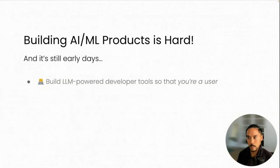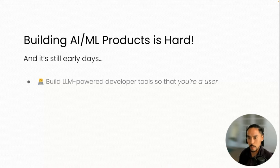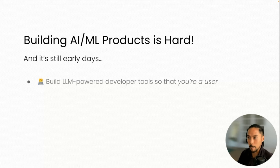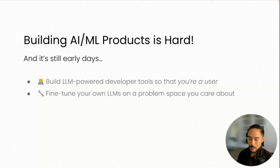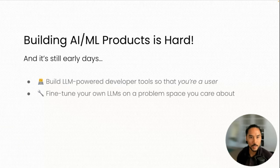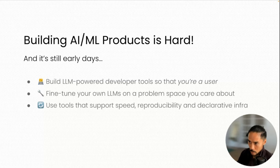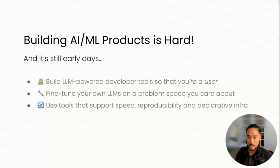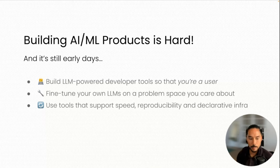It's good to build LLM-powered developer tools so that you're a user. We are all coders and programmers, and many of the use cases of LLMs are for coding — I use GitHub Copilot all the time. As an ML engineer, I don't want to lose track of models as weights: fine-tunable, mutable artifacts you can specialize to a certain dataset. I also want to build tools that support speed, reproducibility, and declarative infrastructure. Doing these three things at this formative time will help you build a deeper understanding.